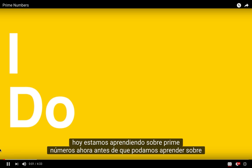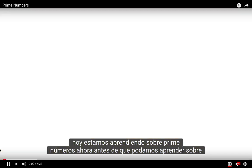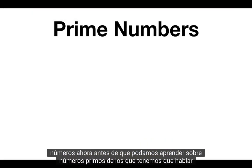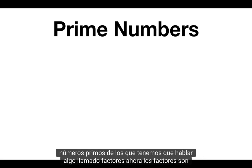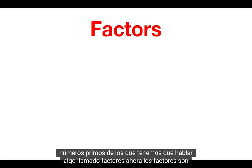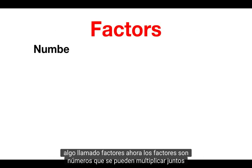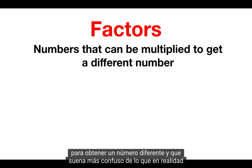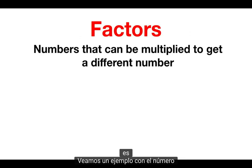Today we are learning about prime numbers. Before we can learn about prime numbers, we have to talk about something called factors. Factors are numbers that can be multiplied together to get a different number. And that sounds more confusing than it actually is.